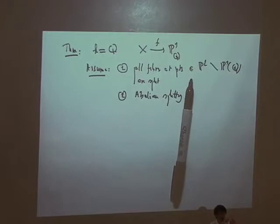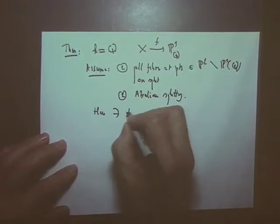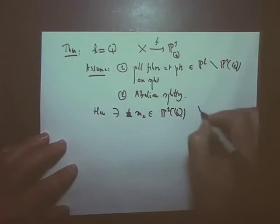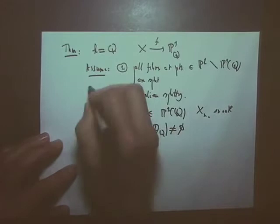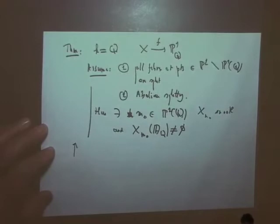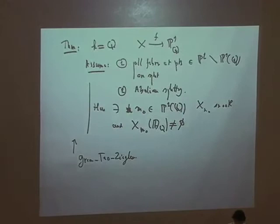And then, there exists M₀ in P¹ of Q, X_{M₀} smooth, and X_{M₀} of A_Q, not empty. And that's the theorem. And this is based on what I showed you in a special case at the end of the last lecture. This is based on Green-Tao-Ziegler. That is, they provide a suitable substitute for Schinzel's hypothesis.